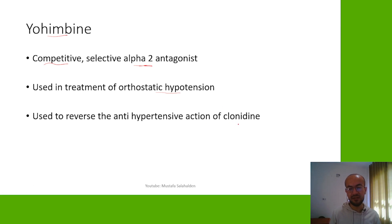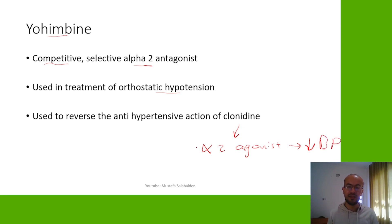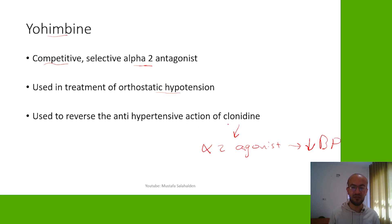Clonidine is an alpha-2 agonist, so it decreases norepinephrine release and lowers blood pressure. Yohimbine, as an alpha-2 antagonist, has the reverse effect of clonidine. It is used when there is severe hypotension due to clonidine overdose or excess, reversing its antihypertensive action.